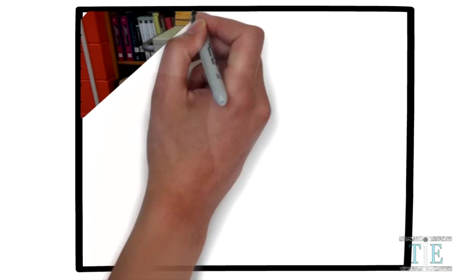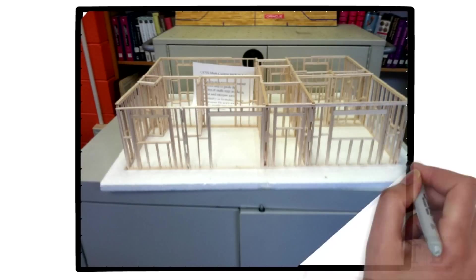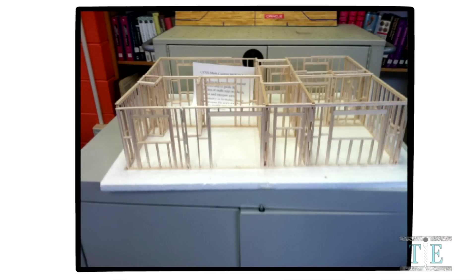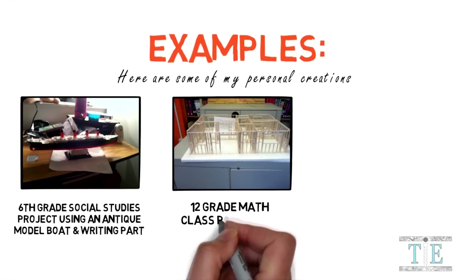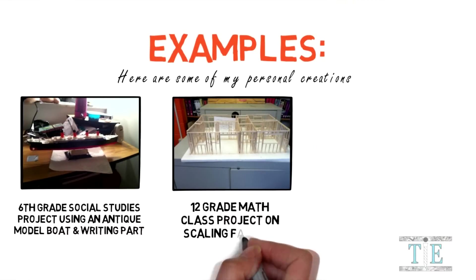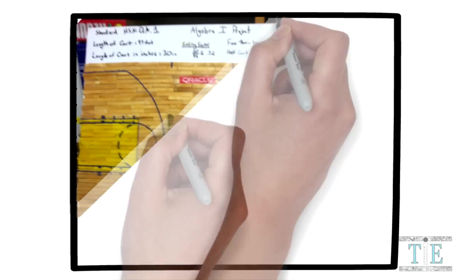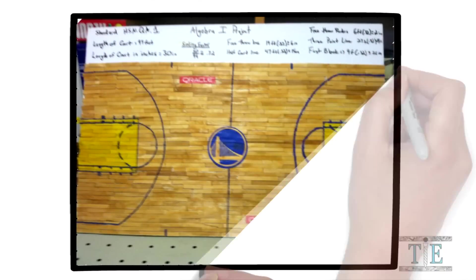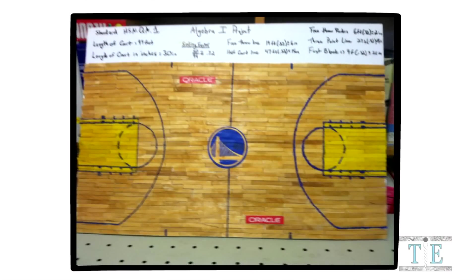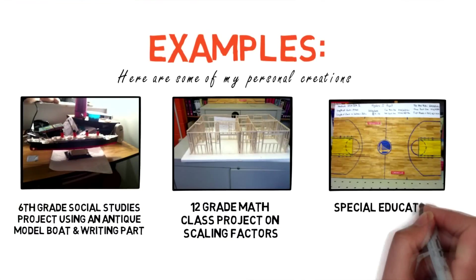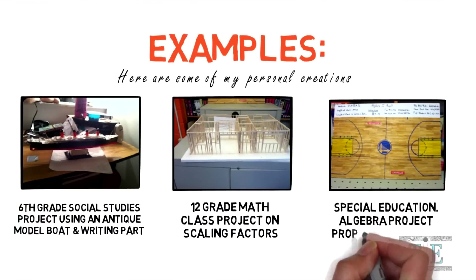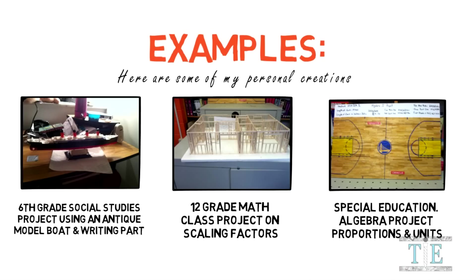The following project asked students to find the proper measurements and create a scale frame of a two-bedroom hip model house. It was for a 12th grade math analysis course. And the last project asked students to convert from feet to inches and use the measurements to paint and create a miniature basketball court. It was actually used for an at-risk algebra one course.